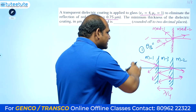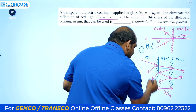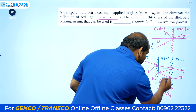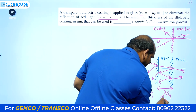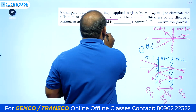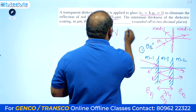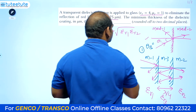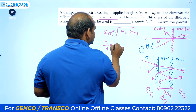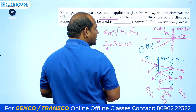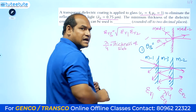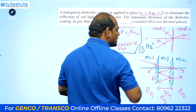Three media are present, each having certain permittivity and permeability — εr1, εr3, and εr2. One important condition is that εr3 is the geometric mean of εr1 and εr2. The other condition is that the thickness of slab 3 is lambda by 4. These are the two important conclusions regarding this concept.